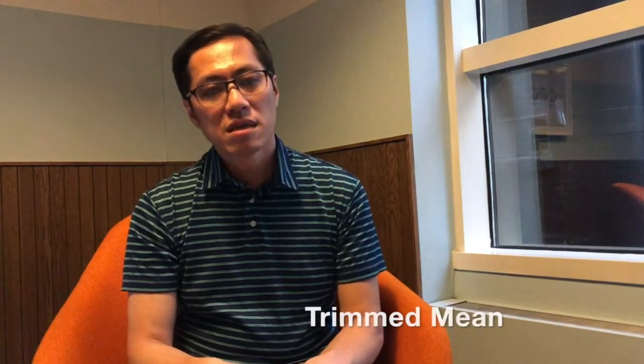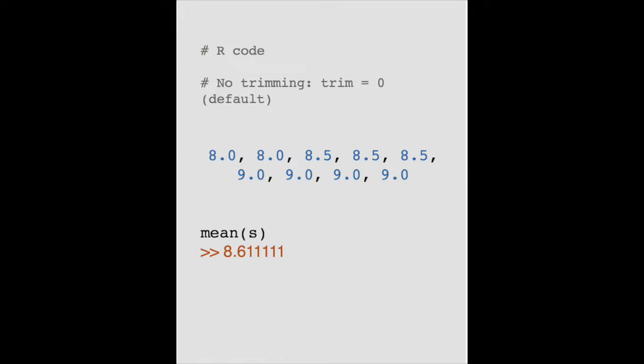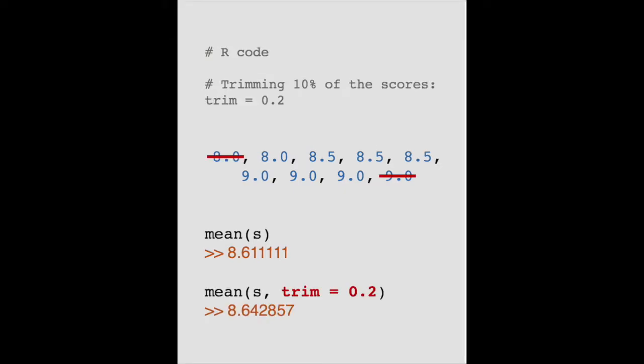Trim tells R how many observations to drop from the calculation. So in our diving competition, the rule may state to drop the highest and lowest scores before computing the average. This is known as the trimmed mean, with 2 out of 10, or 20% trimming. If there are 10 judges, then 20% trimming means taking the average of the middle 8 scores. Instead of running mean(x), you would run mean(x, trim = 0.2). The 0.2 tells R to drop 20% of the data.